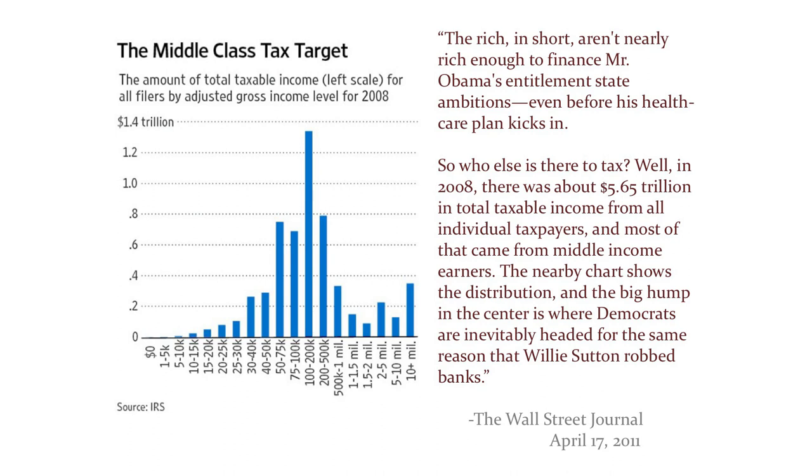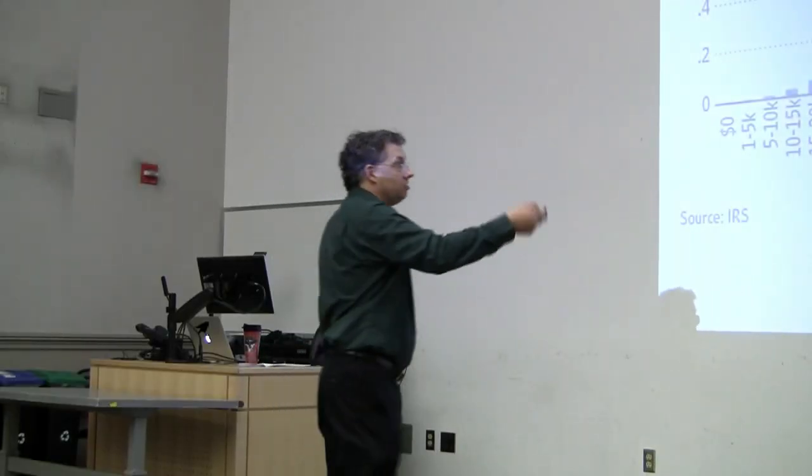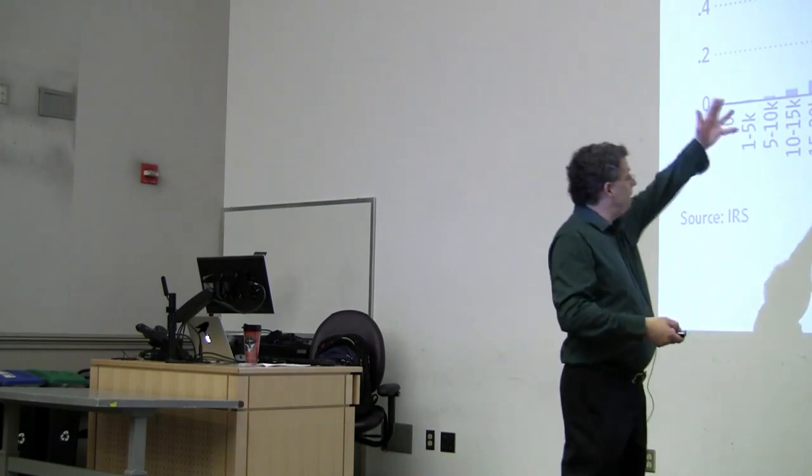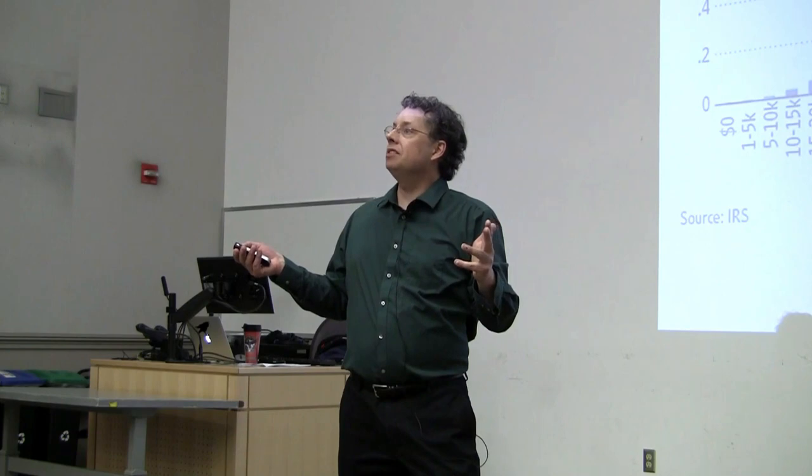The nearby chart shows the distribution and the big hump in the center. This is what they call the middle class, which I guess, if you're a Wall Street Journal reader, $100,000 to $200,000 is middle class. That's where the money is. So they say Democrats are inevitably headed there to the middle class for the same reason that Willie Sutton robbed banks. You guys know why Willie Sutton robbed banks?